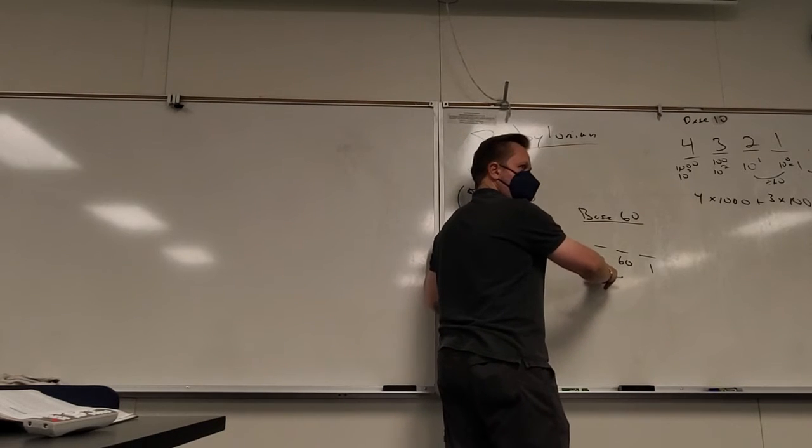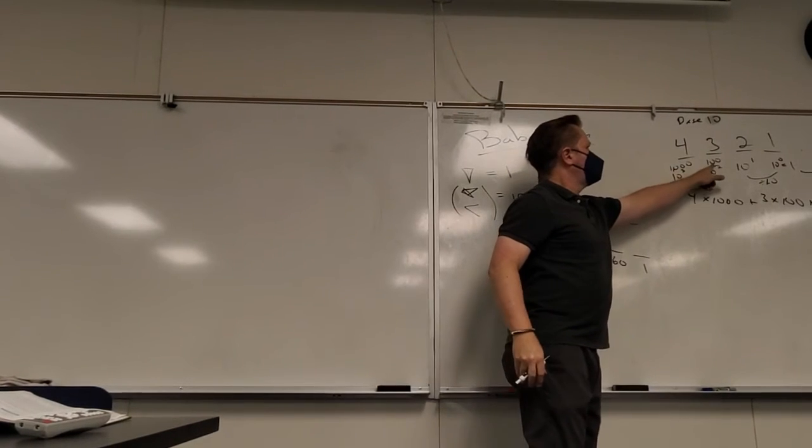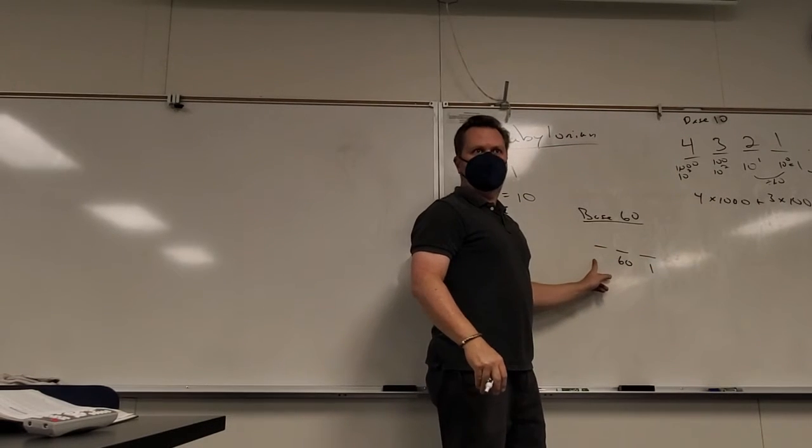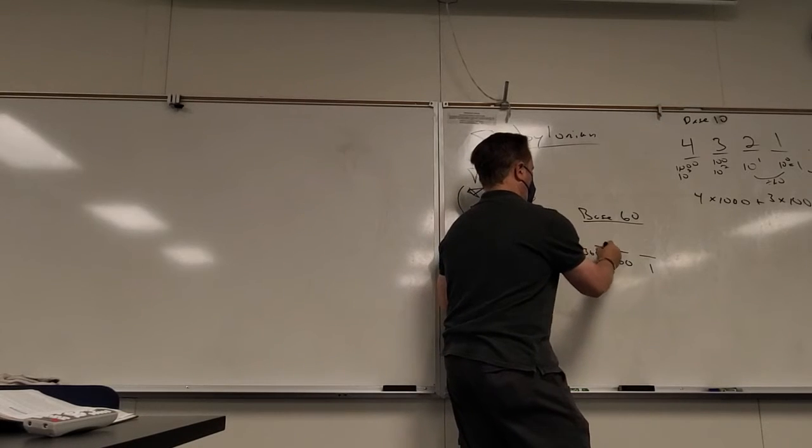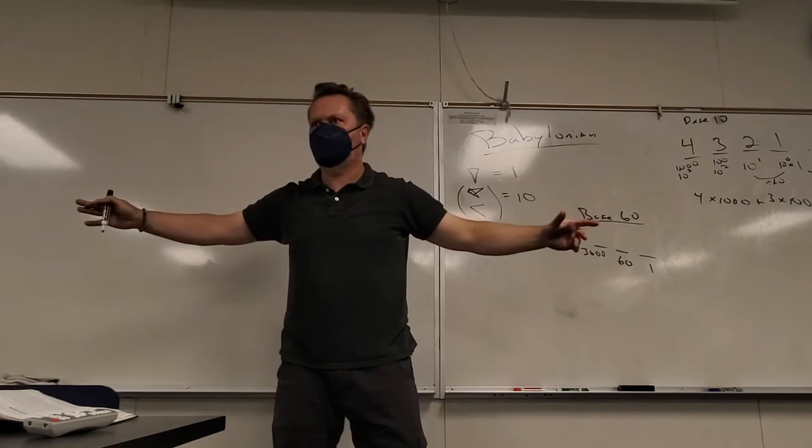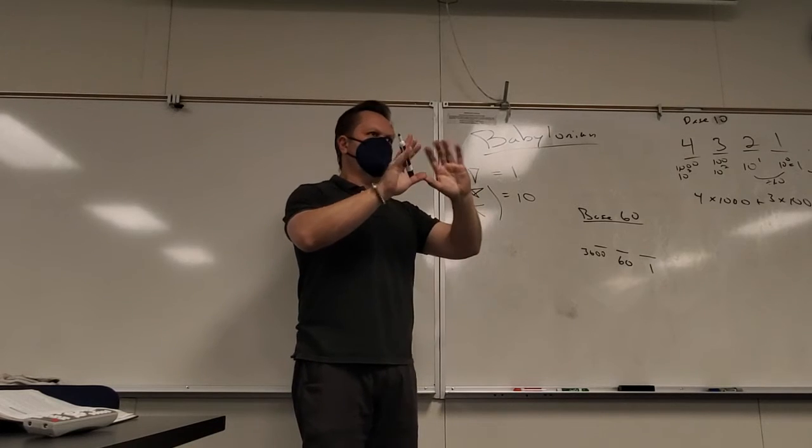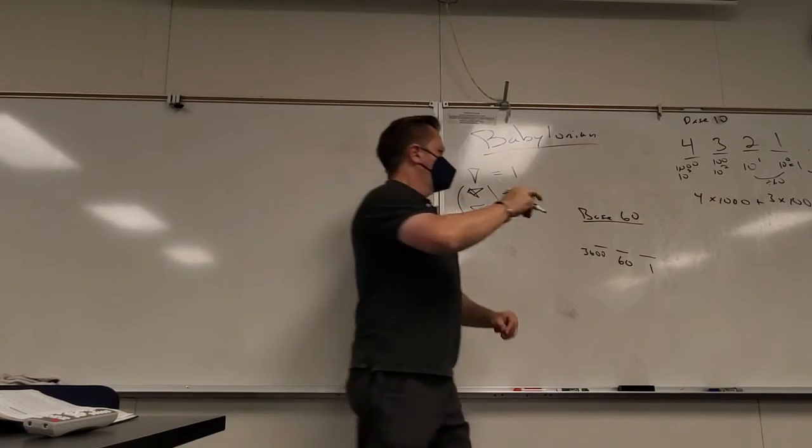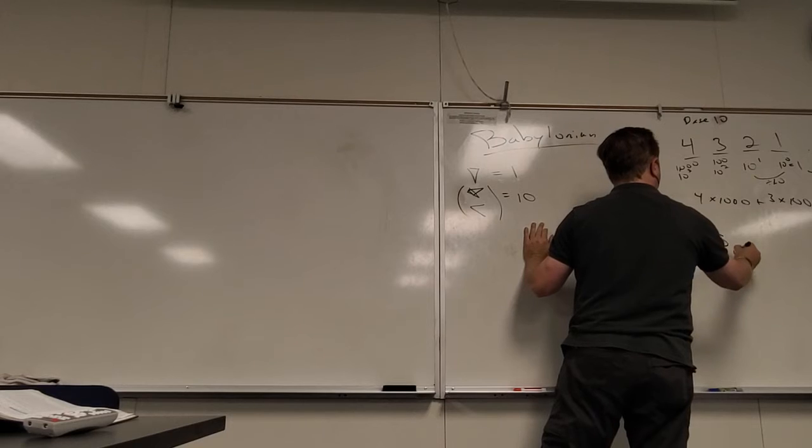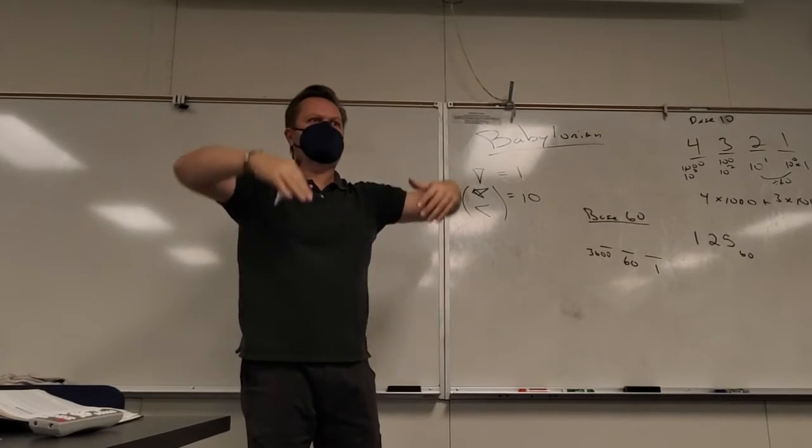So real quick, base 60, what does it look like? What's the very first place got to be in base 60? Any base actually, the very first place is the ones place because you got to be able to represent one, two, three very quickly. So the very first place is ones. What's the next place in base 60?